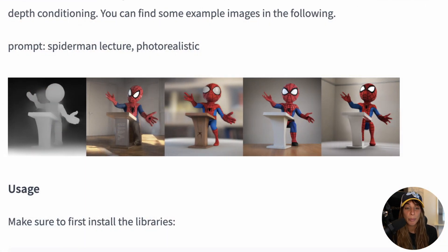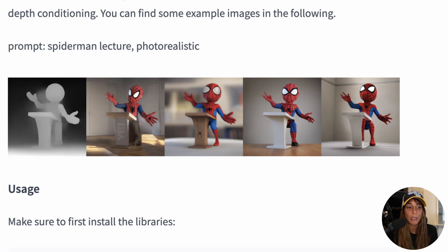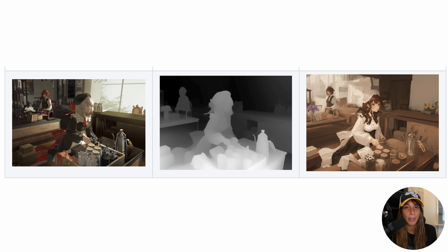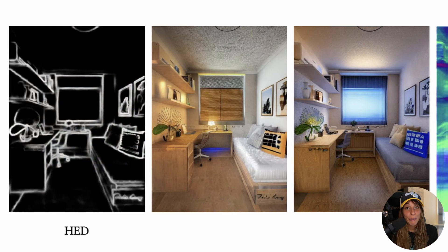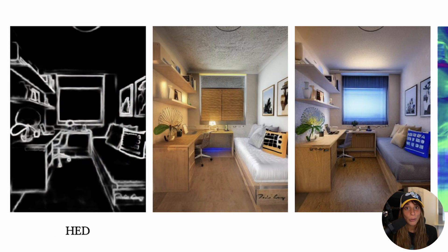Another very useful model is Depth. With Depth, we can control the depth of an image — for example, if you have a picture of two persons and one is closer to the camera while the other is in the background, Depth will detect that. It creates a grayscale image where black represents deeper areas and white represents less deep areas. Very similar to Canny, you have Soft Edge or HED edge detection, which creates soft edges of an image.